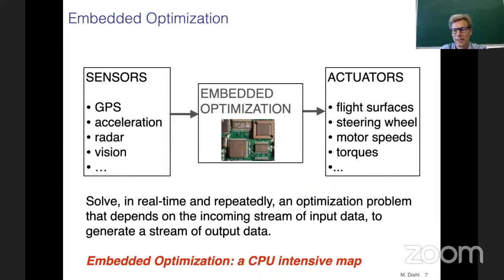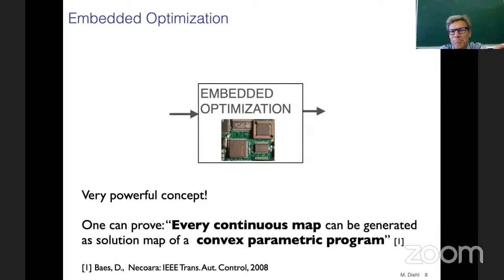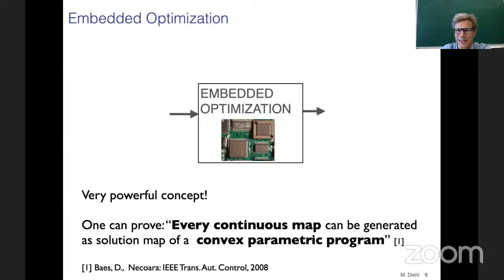This map can be surprisingly general and extremely expressive. One can prove, for example, that every continuous map from one finite-dimensional space to another can be generated by the solution of a convex parametric program — a quite restricted but favorable class of embedded optimization problems, convex in both parameters and optimization variables. This is essentially a universal approximation theorem for embedded optimization, analogous to universal approximation theorems for neural networks.